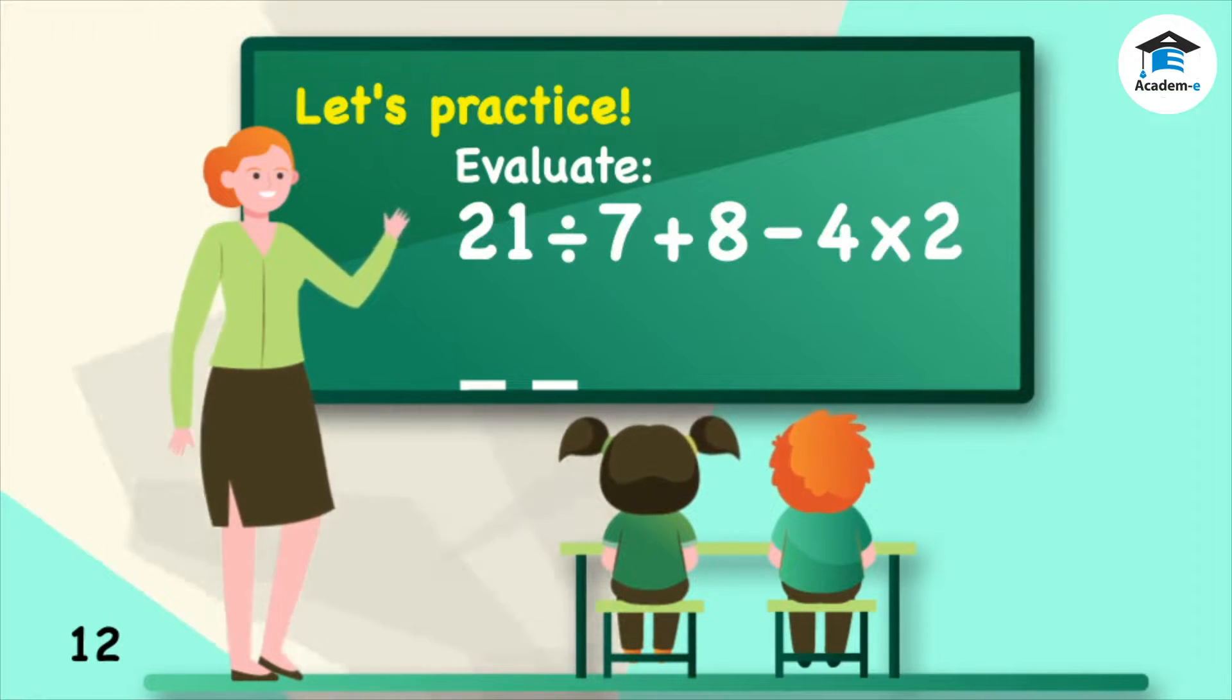Evaluate. 21 divided by 7 plus 8 minus 4 times 2. The answer is 3.